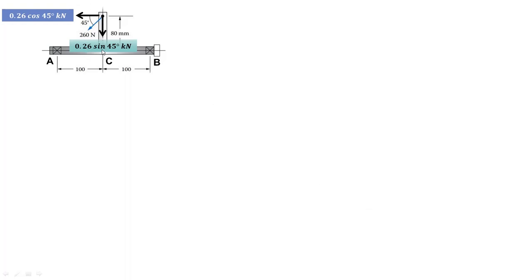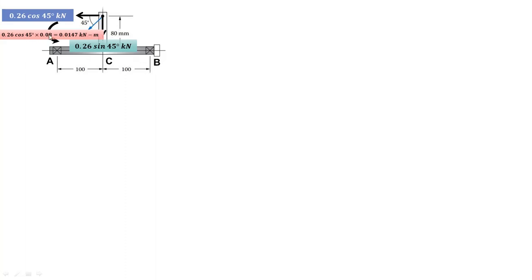The line of action of 0.26 sin 45 passes through C, so it will not produce any moment about point C. But the horizontal force of 0.26 cos 45 kN will produce an anticlockwise moment about point C, because the perpendicular distance is 80 mm or 0.08 meter. So moment equals force multiplied by perpendicular distance: 0.26 cos 45 × 0.08 = 0.0147 kN·meter.